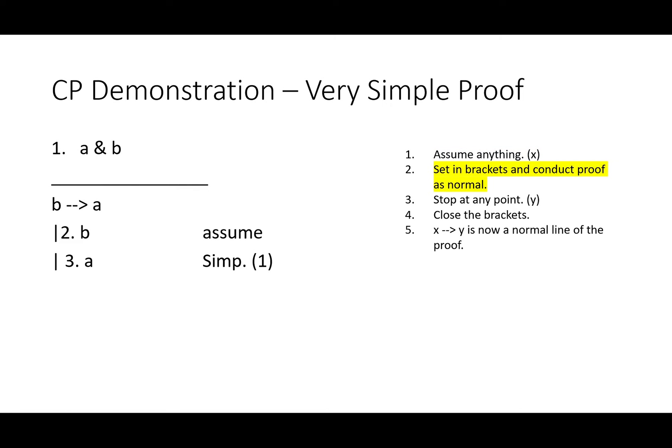So set your brackets and conduct the proof as normal. We'll do a simplification, and that gets us A, and that's where we'll stop. Line 4, we will close our brackets, and we'll get if B then A, by conditional proof from lines 2 and 3.